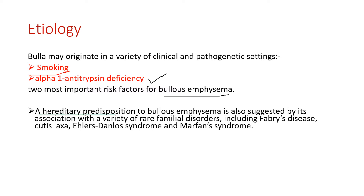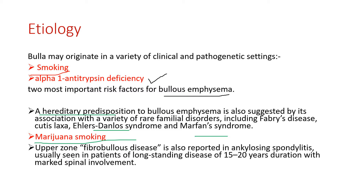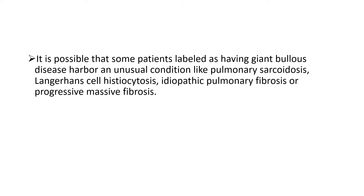Other causes include hereditary predisposition, which can be seen in conditions like Littles syndrome and Marfan syndrome. In young teenagers, marijuana smoking can also cause bullae in the upper lobes. In long-standing ankylosing spondylitis, it can also predispose to fibro-bullous lung disease.